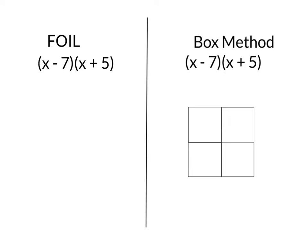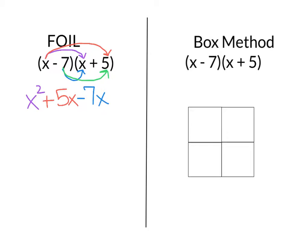So again, I'm going to do FOIL and then do the box method. We'll start again with the FOIL method. The F stands for First, so I'm going to take my first value in each set of parentheses and multiply them together — X times X is X squared. Then I go to O, which is Outside, so I'm going to take the two values on the outside of my problem, which is X times 5 — that's going to give me plus 5X. Then I move to my inside values — the two values on the inside are negative 7 and X, so negative 7 times X is negative 7X. And that leaves me with my Last, which is negative 7 times positive 5 — a negative times a positive is negative — so negative 35.